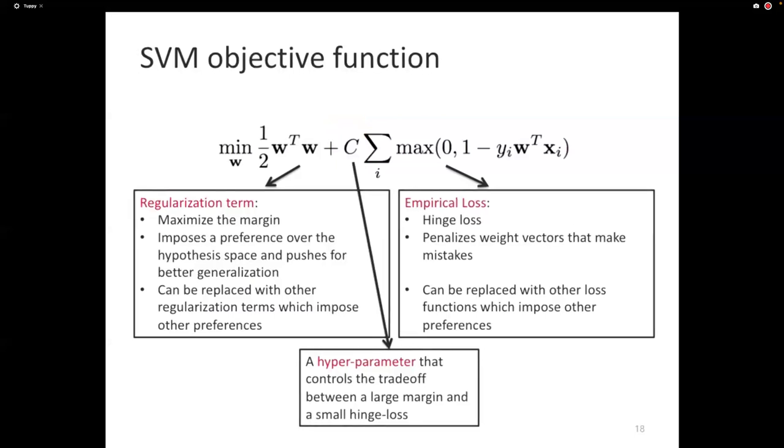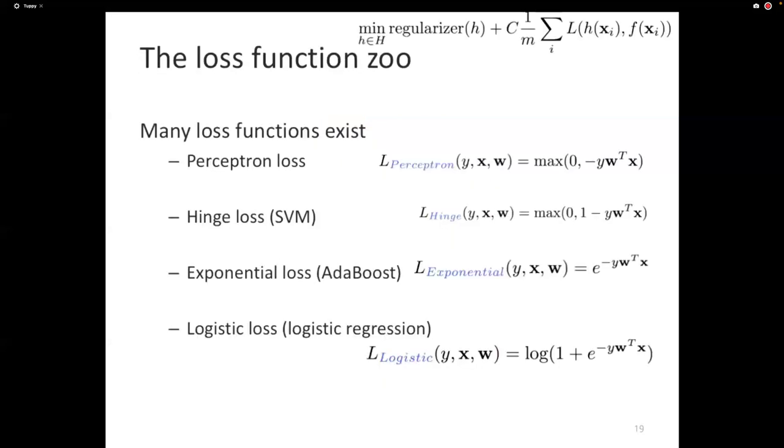But there are other loss functions. We've already seen the perceptron. The perceptron corresponds to its own loss, the perceptron loss. We've seen hinge loss. We've encountered Adaboost before. It turns out that if you treat each feature as a weak classifier, then the Adaboost algorithm actually minimizes something called an exponential loss, which is a surrogate for the 0-1 loss. Logistic regression minimizes the logistic loss. There are different loss functions.